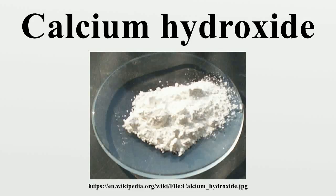Calcium hydroxide, traditionally called slaked lime, is an inorganic compound with the chemical formula Ca(OH)₂. It is a colorless crystal or white powder and is obtained when calcium oxide is mixed, or slaked, with water. It has many names including hydrated lime, caustic lime, builder's lime, slack lime, cal, or pickling lime. Calcium hydroxide is used in many applications, including food preparation.